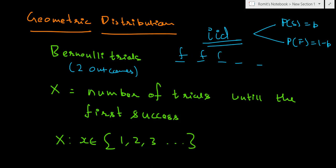These trials keep going until you get the first success. So you get failure, failure, failure, failure, and then success — stopping at the fifth trial. Or you can have failure and success, stopping at the second trial. Basically X is the number of trials until the first success. For example, a student taking exams: how many times does he have to take the exam before he passes? Once he passes, he won't take the exam again. As soon as success occurs, you stop the trials.